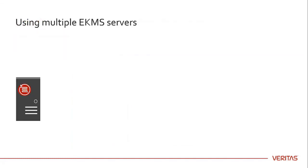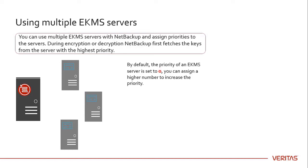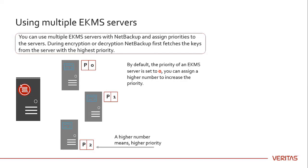You can use multiple eKMS servers with NetBackup and assign priorities to the servers. During encryption or decryption, NetBackup first fetches the keys from the server with the highest priority. By default, the priority of an eKMS server is set to zero. You can assign a higher number to increase the priority — a higher number means higher priority.